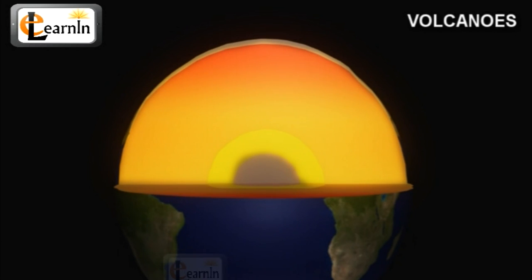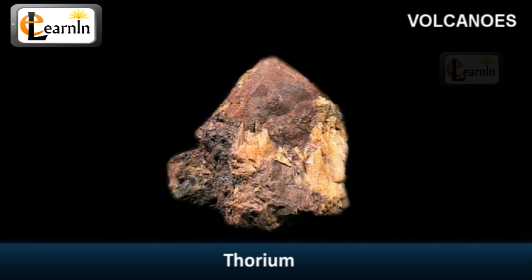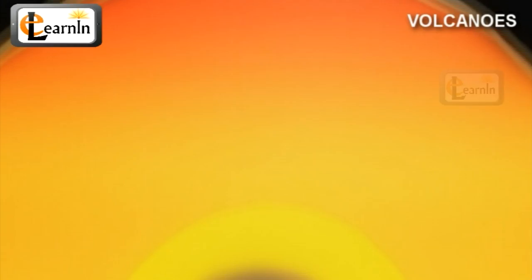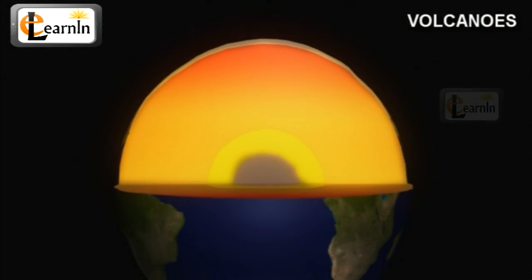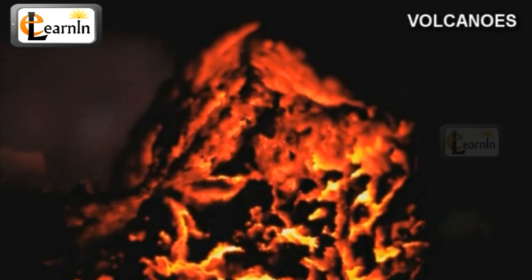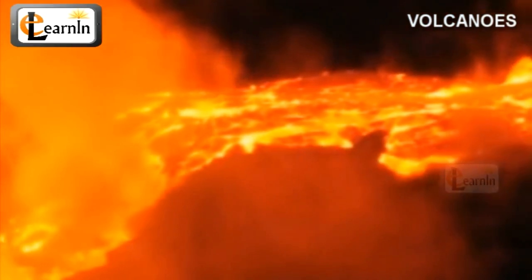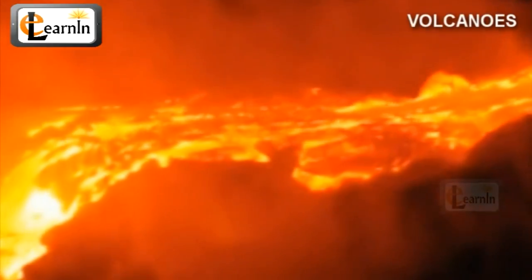The outer layers of the Earth consist of layers of rock containing different types of minerals. There are a few minerals called radioactive minerals, such as radium, uranium, thorium, plutonium, etc., which continuously emanate heat. When they are present in deep-seated rocks, the heat thus emitted gets accumulated, as rocks are bad conductors of heat.